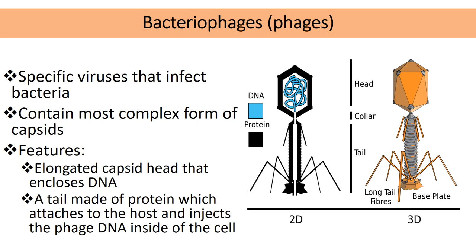Here's a picture of a bacteriophage. Bacteriophages are viruses that infect bacteria — they look like little spaceships. A bacteriophage has an elongated head where it stores its genetic material, in this case DNA. It also has a tail with proteins that attach to the host cell — in this case the bacteria — and then injects its DNA in order to make more bacteriophages.